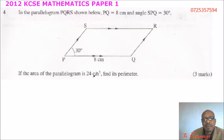If the area of the parallelogram is 24 cm squared, find its perimeter, and you'll get yourself 3 marks.